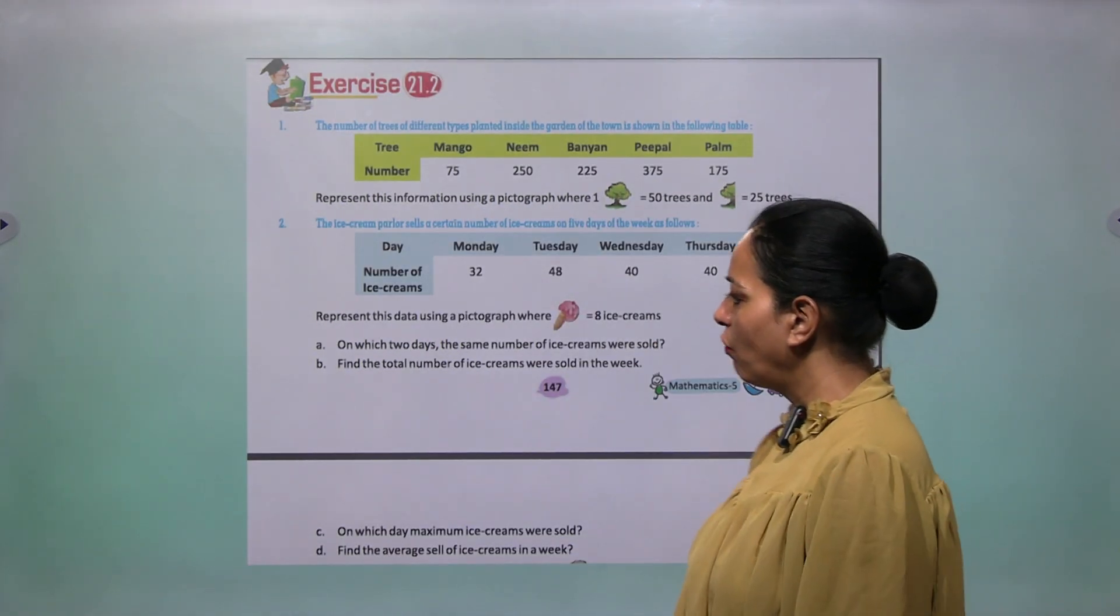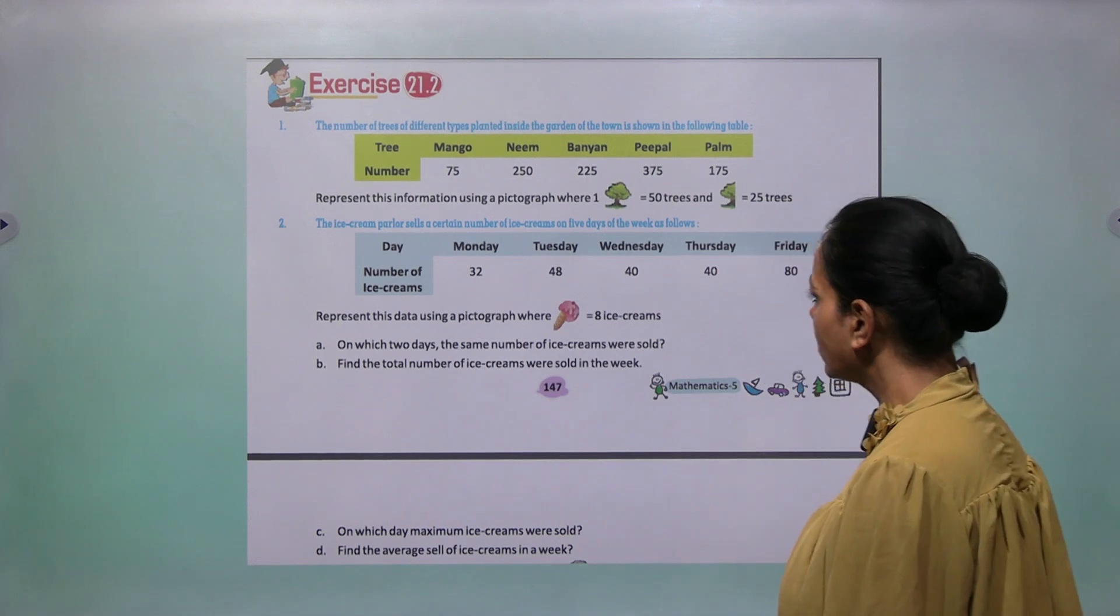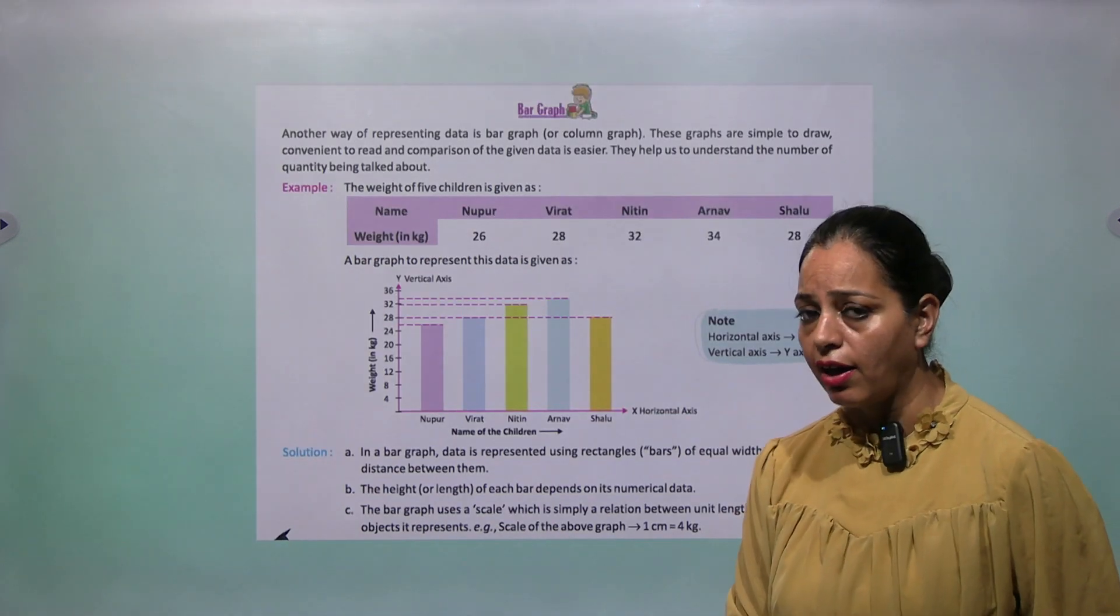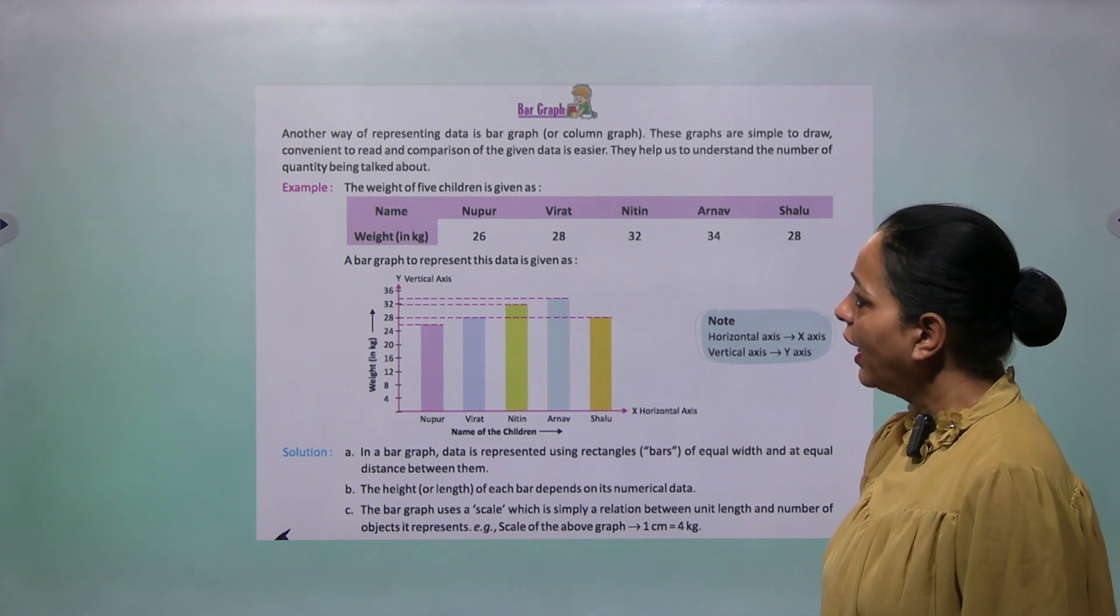And which day was the coldest? The day with the least temperature was Thursday, that is 25 degree Celsius, right? So same, 21.2 you can try it.